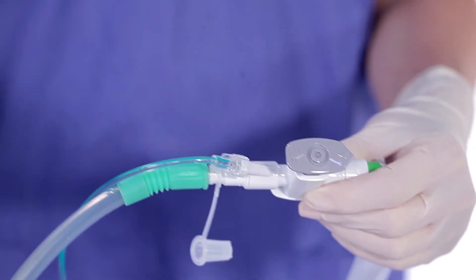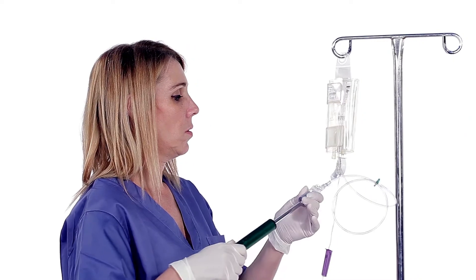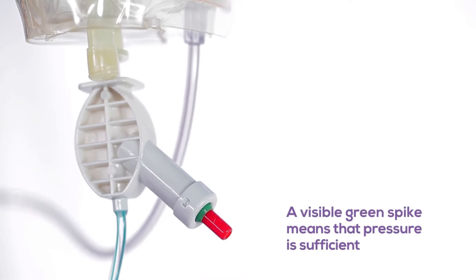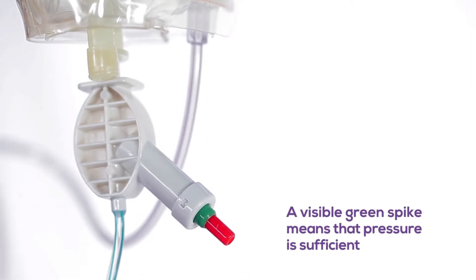Open the roll clamp and prime the set, then connect the extension line to the handle to complete setup.